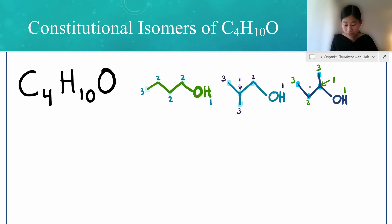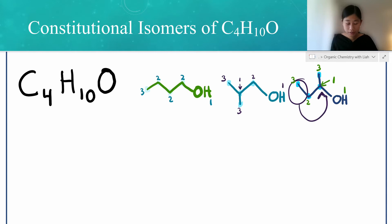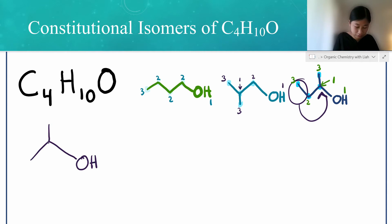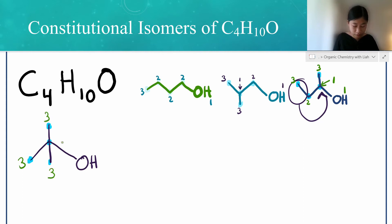Now from our last structure, we could have drawn this methyl group coming from this carbon right here instead. That gives us something where we have two methyls coming from this carbon. Just to double check: we have four carbons and ten hydrogens — three, three, three, and one, giving us nine plus one, which is ten.